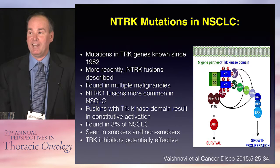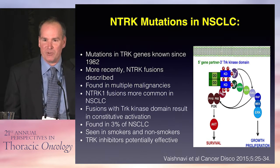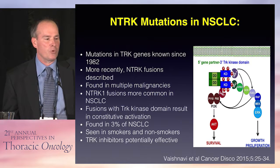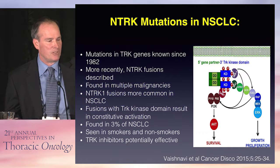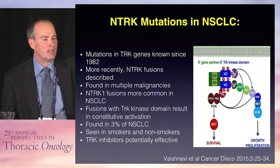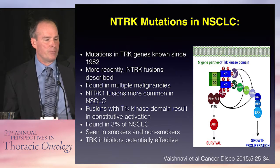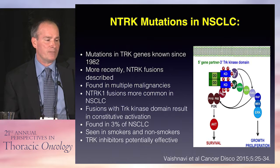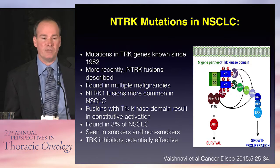NTRK — I didn't know much about NTRK when I was asked to do this section, so it was really interesting. The TRAC family of genes has been known to be oncogenic since the 1980s, but more recently NTRK fusions have been discovered to play an important role in oncogenesis across multiple malignancies, not just lung cancer. There are three NTRK genes; NTRK1 gene fusions are more common in non-small cell lung cancer, resulting in a fusion with the TRAC kinase domain with several five-prime partners, causing constitutive activation of tyrosine kinase activity. This is found in 3% of non-small cell lung cancer — not trivial — and seen in both smokers and non-smokers. TRAC inhibitors are in development and potentially effective.